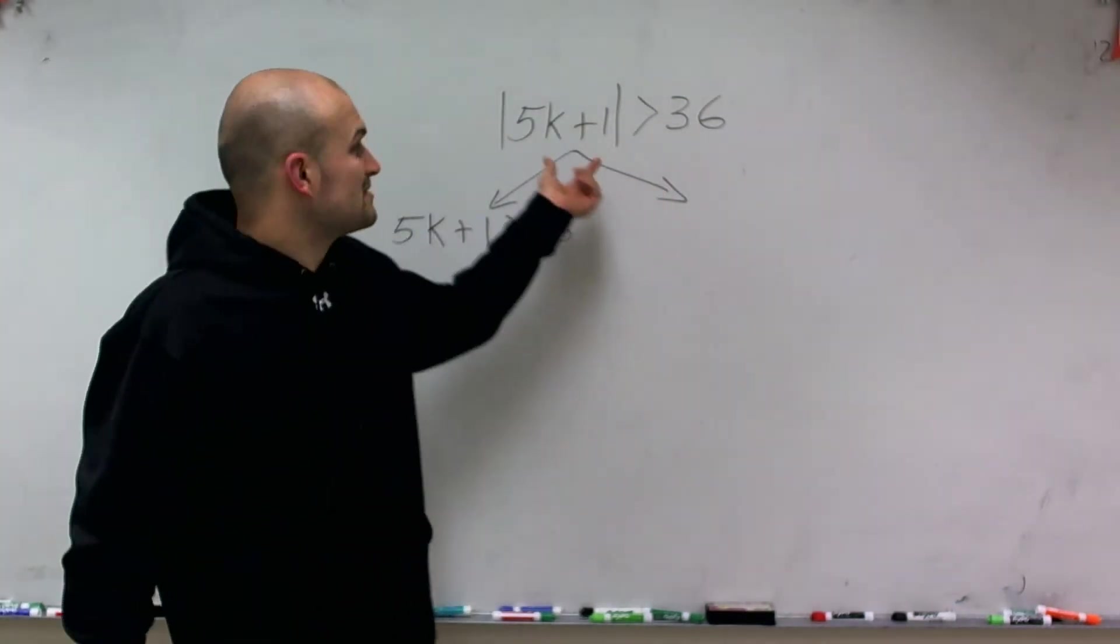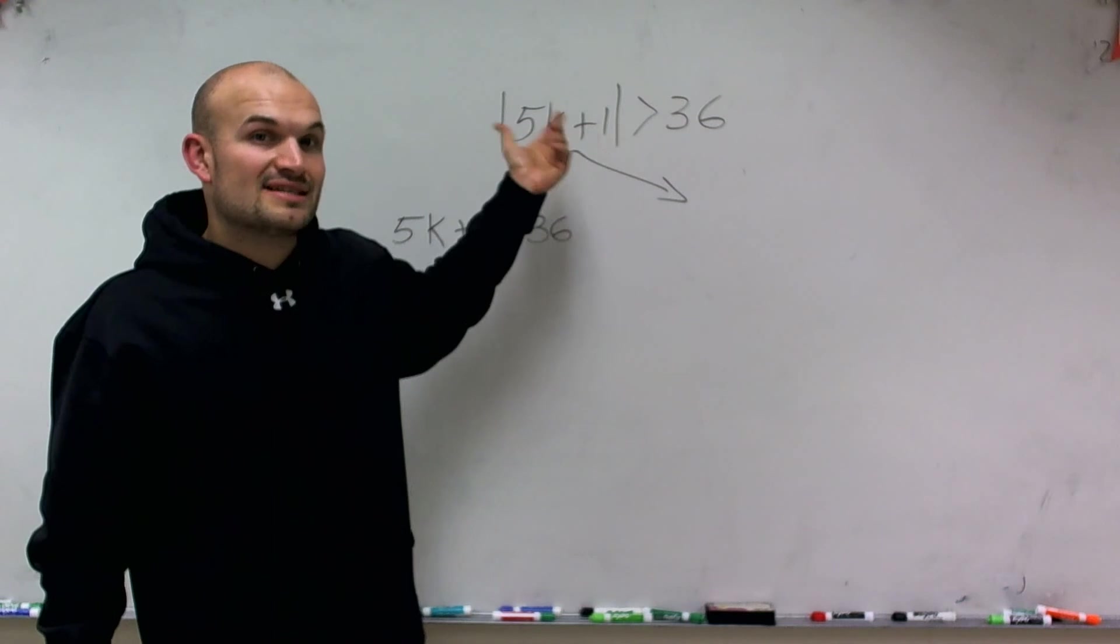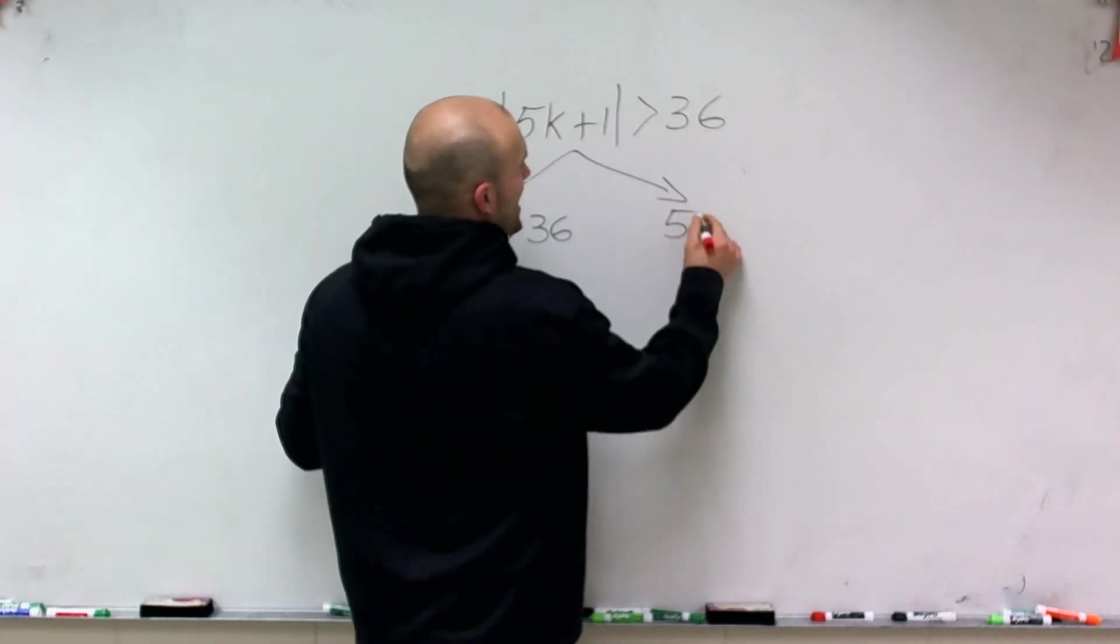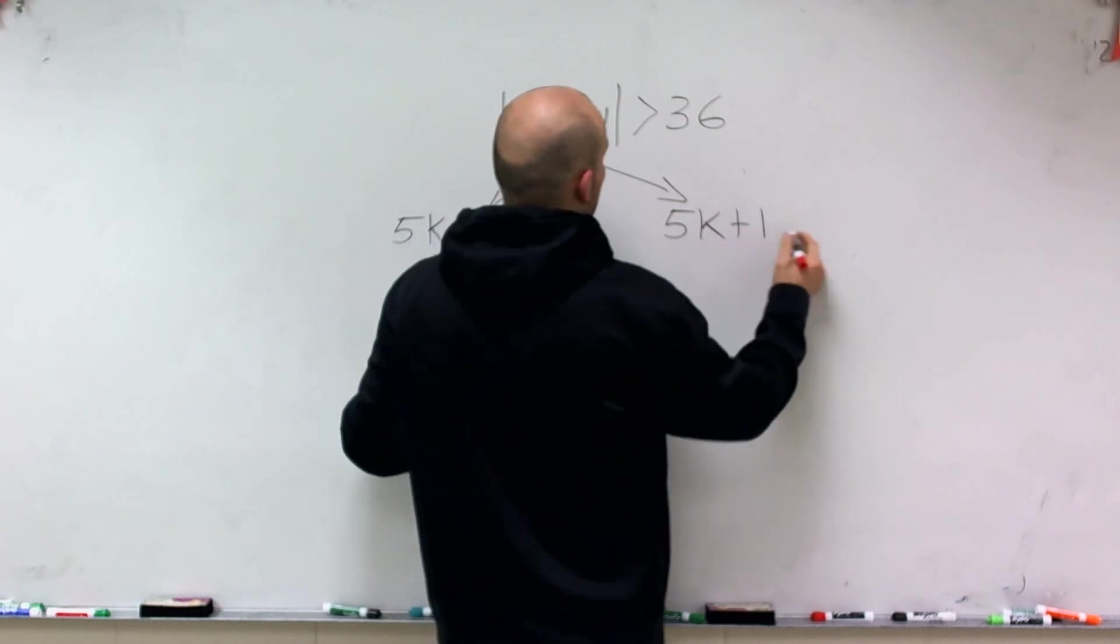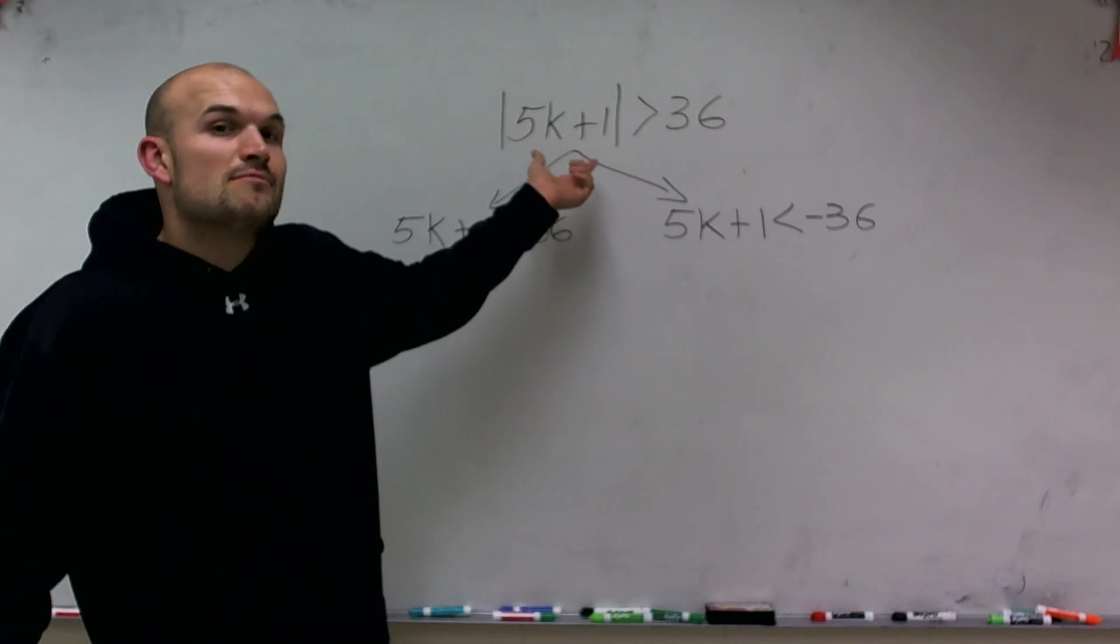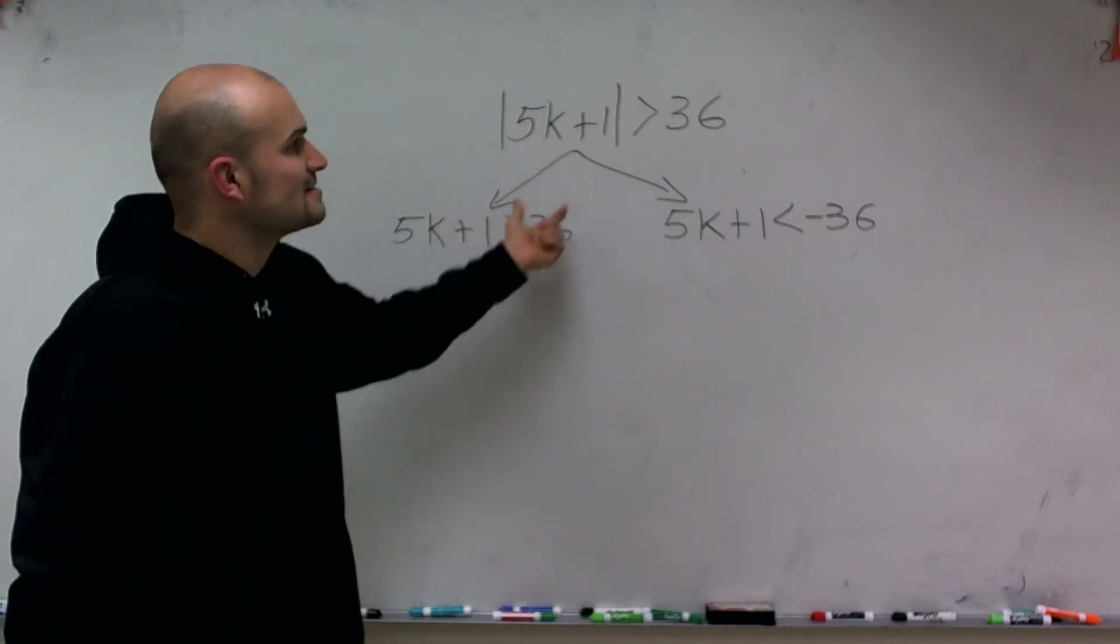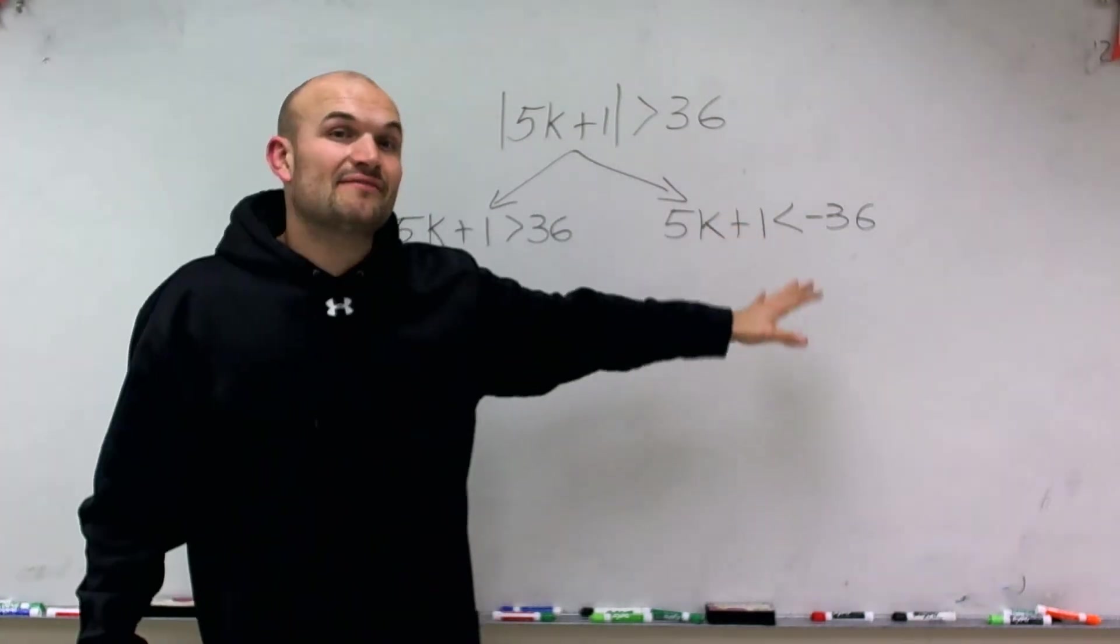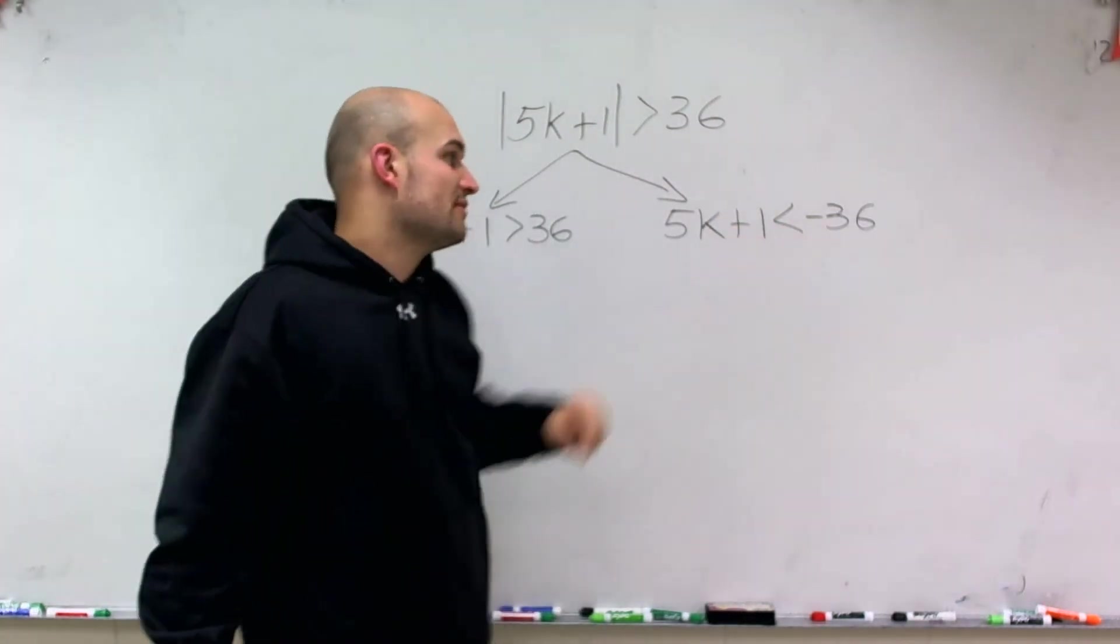But then I also need to represent what if I had a negative value, the same value but a negative inside the absolute value. So therefore, to do that, I say 5k plus 1 is now less than negative 36. And that's how I represent if inside my absolute value had the same value as this but negative. And remember, since we're combining with negative and inequality, we've got to make sure we flip the sign.